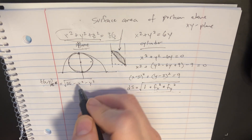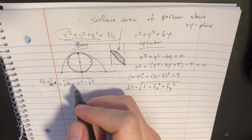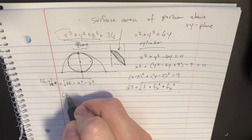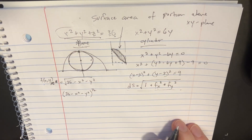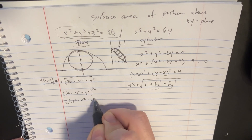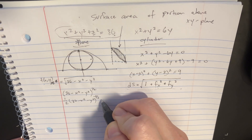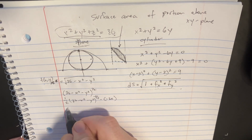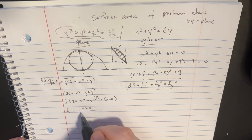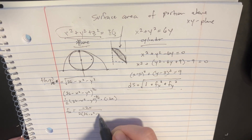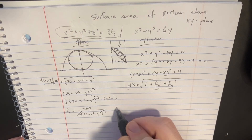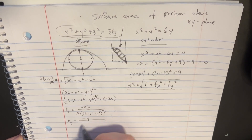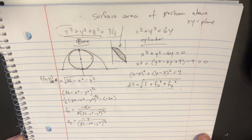Now we can take our derivatives. To take the derivative of 36 minus x squared minus y squared to the 1/2, we'll say this is 1/2 times (36 minus x squared minus y squared) to the negative 1/2, multiplied by the negative 2x inside. So fx equals negative x divided by the square root of 36 minus x squared minus y squared. And fy is going to be really similar — fy equals negative y over the square root of 36 minus x squared minus y squared.